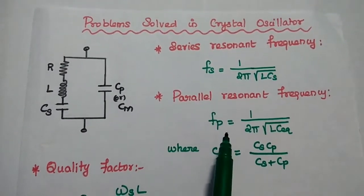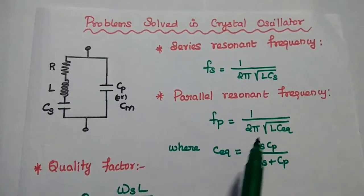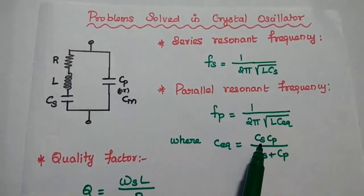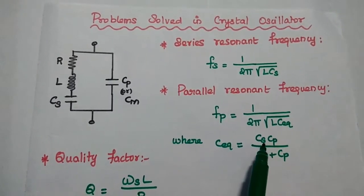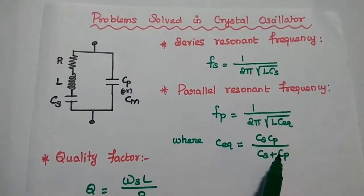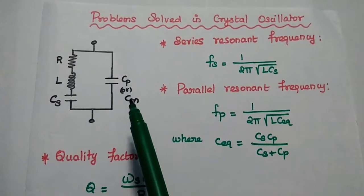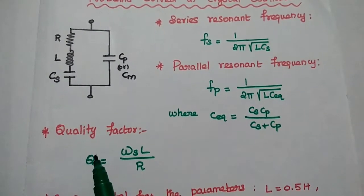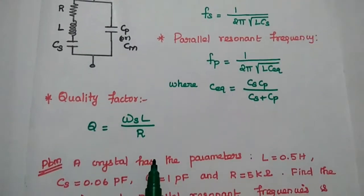Parallel resonant frequency Fp is equal to 1 by 2 pi square root of L into C equivalent, where the equivalent capacitance is equal to the parallel combination of Cs and Cp, that is Cs into Cp divided by Cs plus Cp. This parallel capacitance is also known as mounting capacitance. The quality factor of the crystal oscillator is equal to omega S times L divided by R.